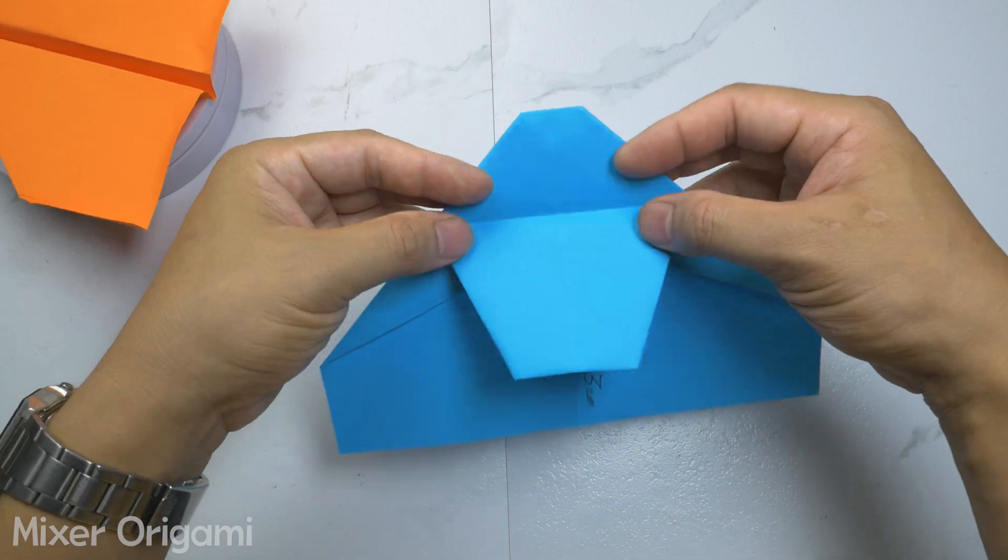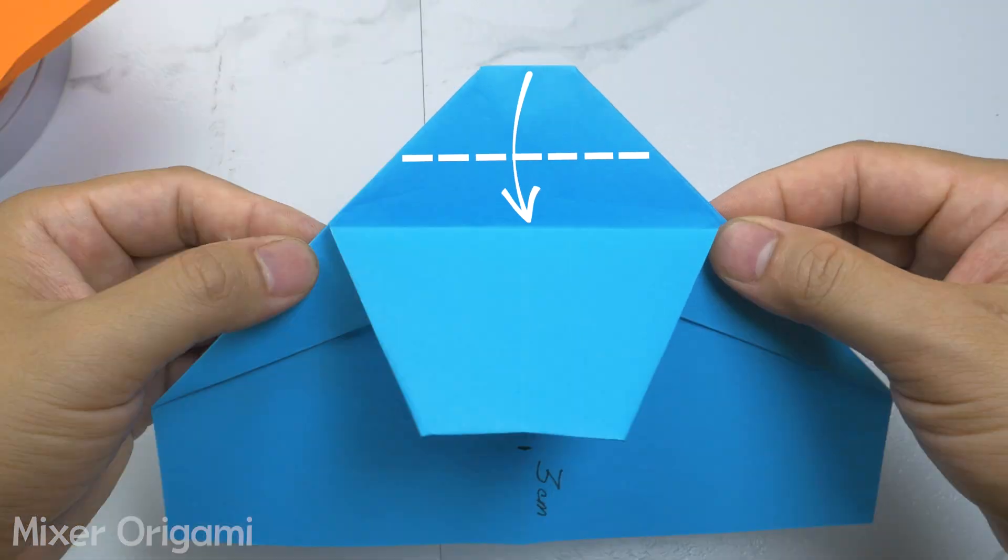Step 10. Open the part you just folded and fold the top of the airplane down to the marked dotted line.